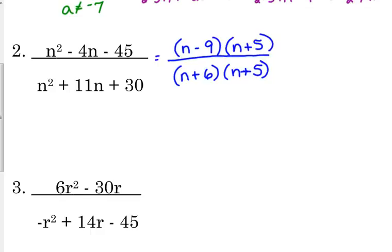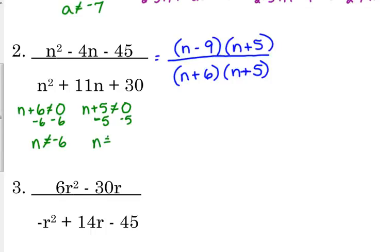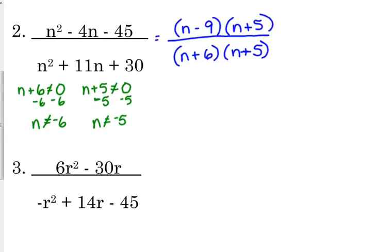The denominator factors into (n + 6)(n + 5). The order you write factors doesn't matter as long as it's factored correctly. For excluded values: n + 6 = 0 gives n cannot equal −6, and n + 5 = 0 gives n cannot equal −5. Going back to our factored expression, (n + 5) appears in both numerator and denominator, so we cancel it. The simplified expression is (n − 9) over (n + 6), and n cannot equal −5 or −6.